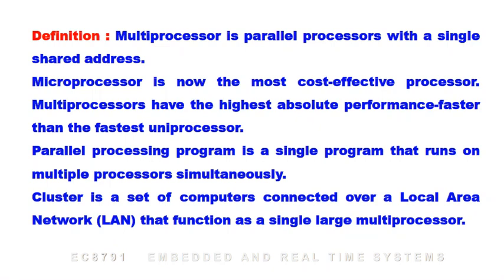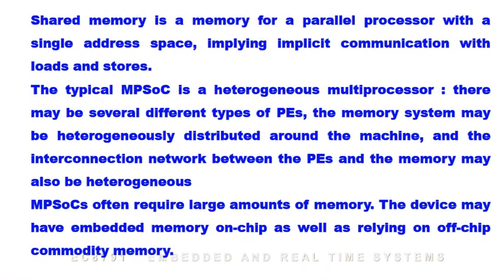A parallel processing program is a single program that runs on multiple processors simultaneously. A cluster is a set of computers connected over a local area network that function as a single large multiprocessor. Shared memory is memory for a parallel processor with a single address space, implying implicit communication with loads and stores.